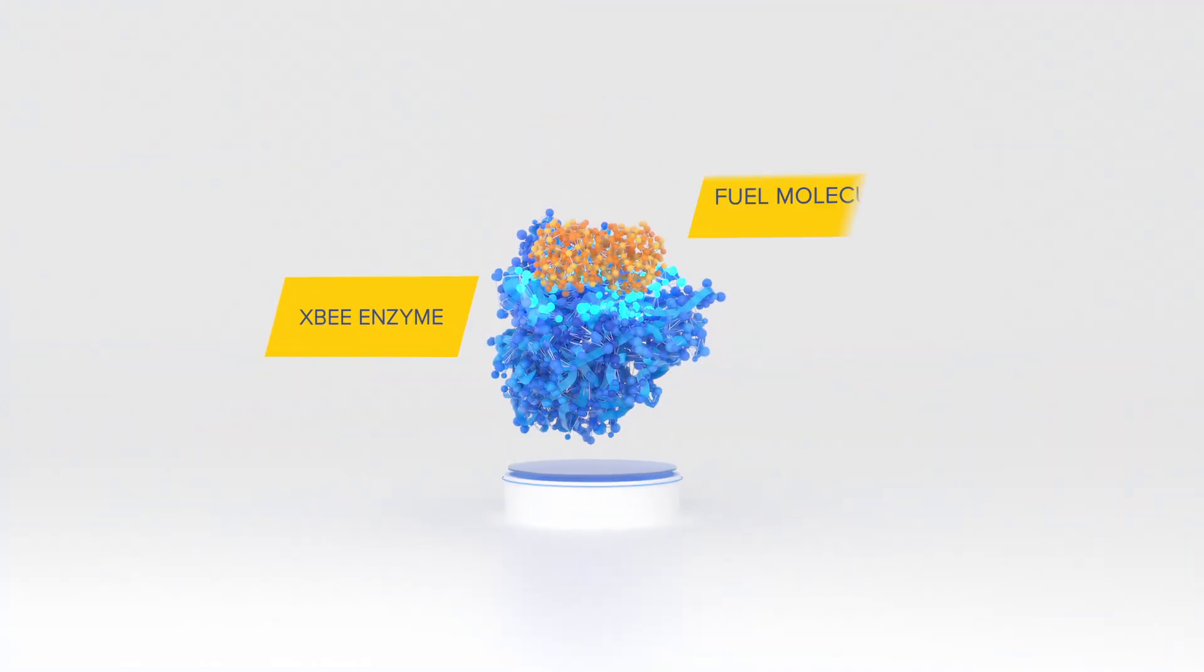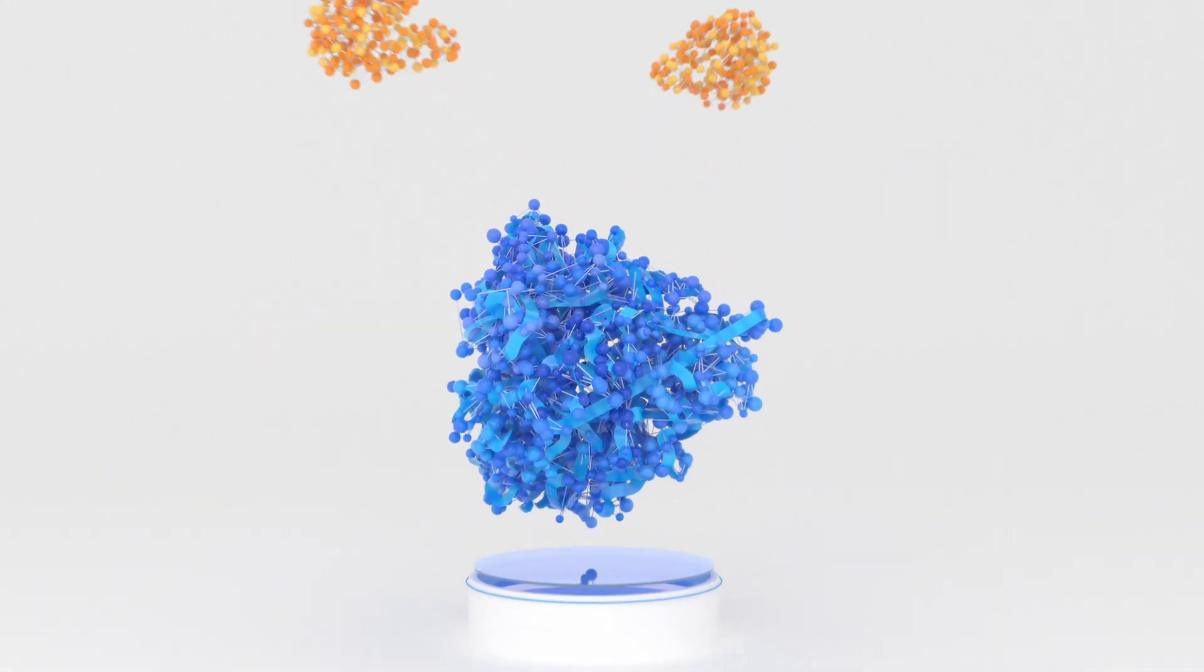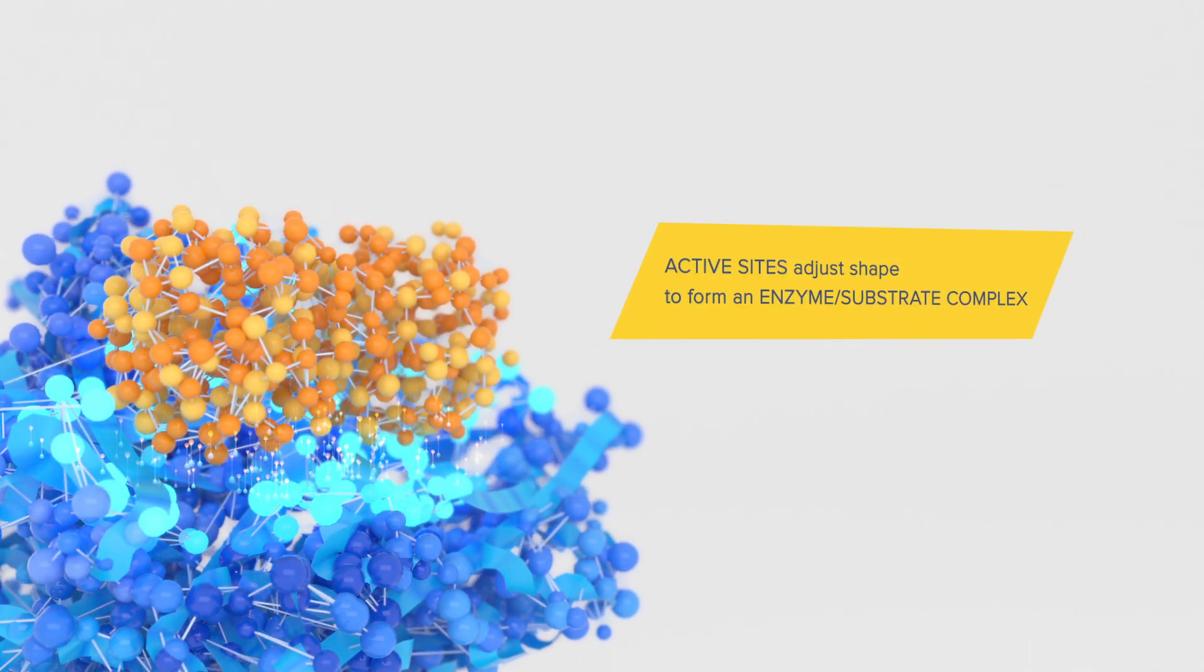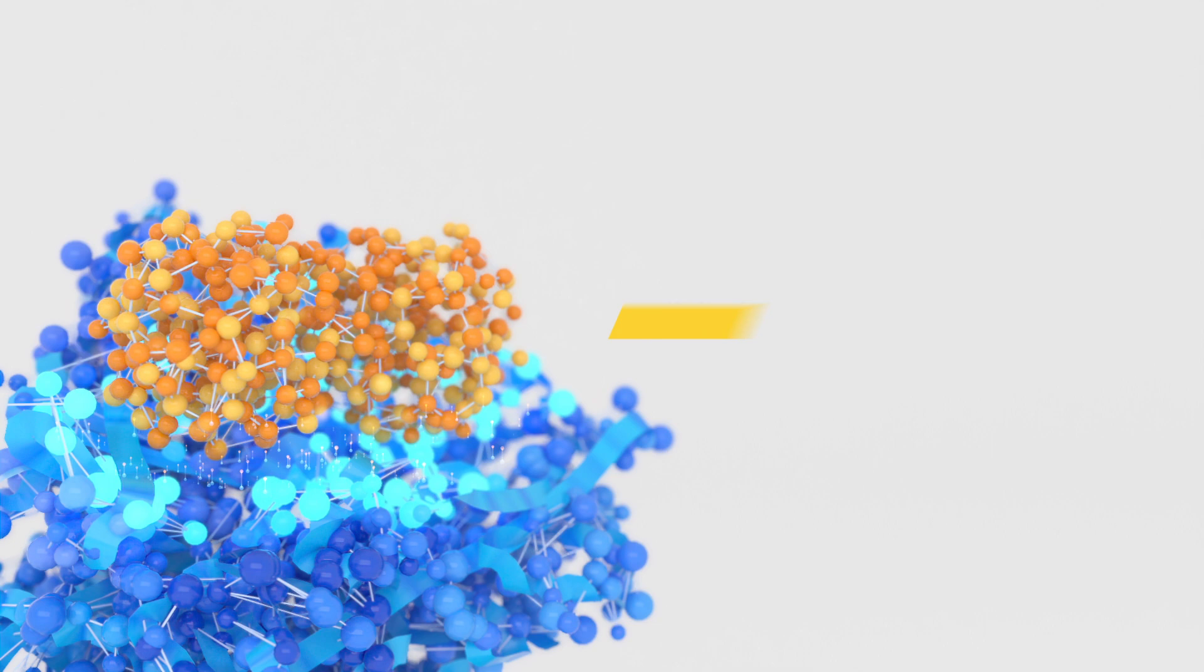As XB's enzymes collide with fuel molecules and contaminant particles, known as substrates, active sites on the enzymes adjust their shape slightly to form a precise fit known as the enzyme-substrate complex.